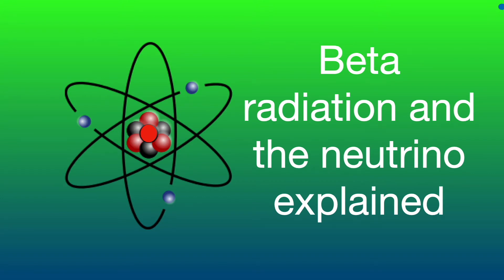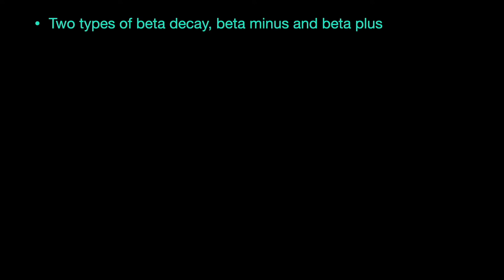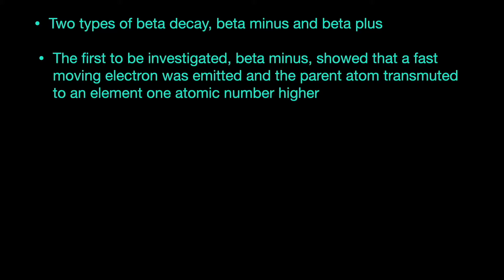That is not an accurate simulation of beta emission, but it gives some idea of what happens. There are two types of beta decay, by far the most common beta minus and also beta plus.